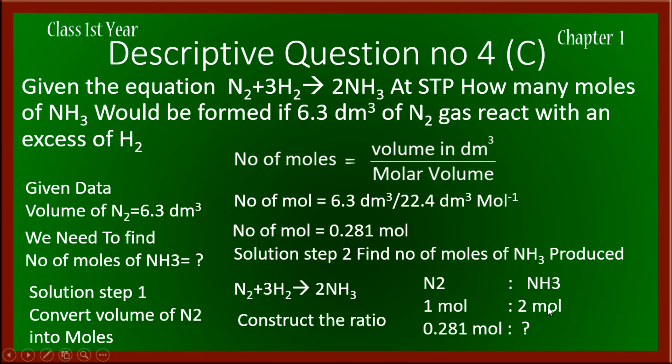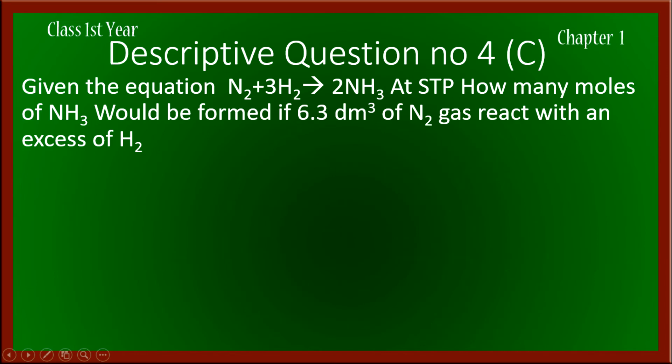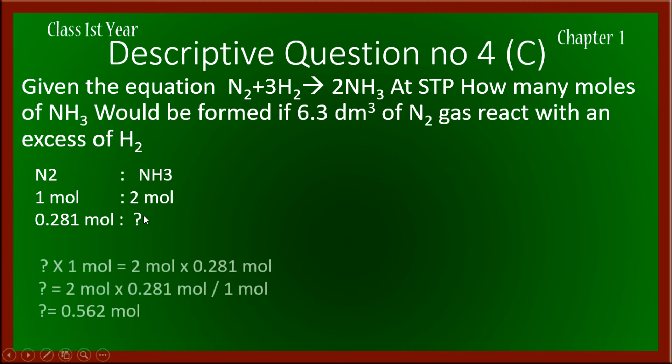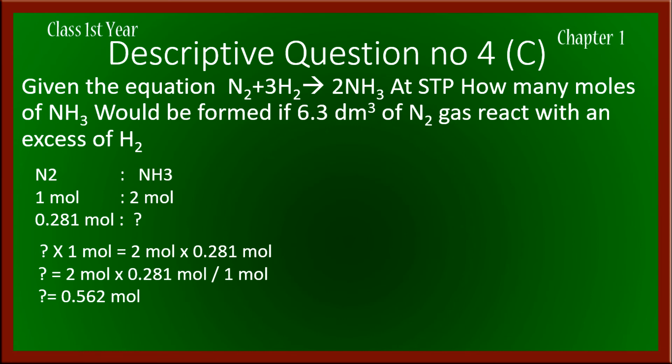From the balanced equation, 1 mole of nitrogen produces 2 moles of ammonia. The amount given is 0.281 moles of nitrogen. So 0.281 moles will produce how many moles of ammonia? We cross-multiply to solve this ratio.